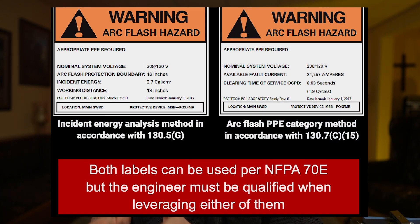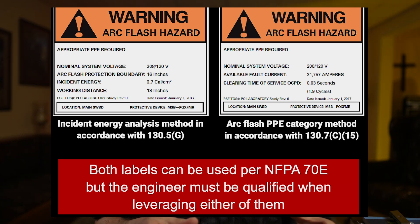Both label types are permitted: you can use the incident energy analysis method per 70E Section 130.5(G), or the arc flash PPE category method per 130.7(C)(15). However, you need to understand the application to know when each is appropriate. Both are valid because both are referenced by NFPA 70E. A key point: the date is required by the National Electrical Code but not by NFPA 70E itself, so it must be affixed to the label.